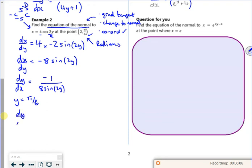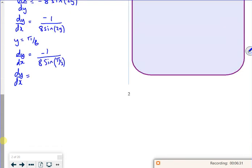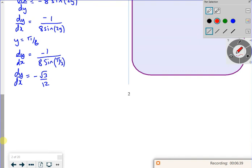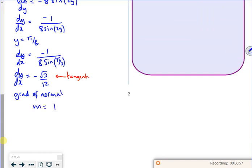So dy by dx is minus 1 over 8 lots of sin 2 lots of pi by 6 is pi by 3. And then, if I put that in my calculator, it gives me dy by dx as minus root 3 over 12. And remember, that's the tangent, but I want normal. So the gradient of the normal is flip it and change the sign.